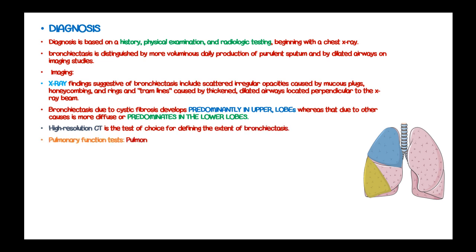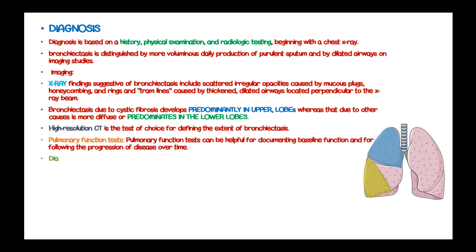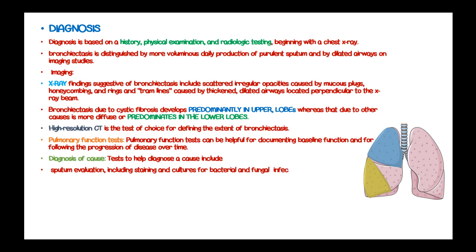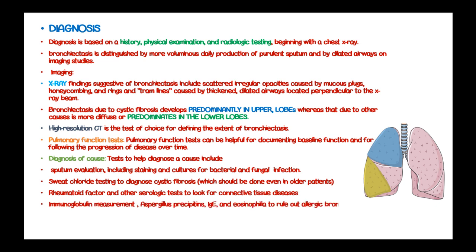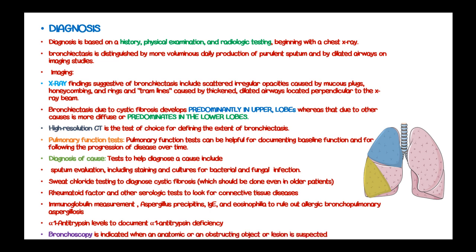High-resolution CT scan is the test of choice for defining the extent of bronchiectasis, and pulmonary function tests help document baseline function and follow disease progression over time. To diagnose the cause, tests include sputum evaluation with staining and cultures for bacterial and fungal infection, sweat chloride testing to diagnose cystic fibrosis, rheumatoid factor and other serologic tests for connective tissue diseases, immunoglobulin measurements such as Aspergillus precipitins, immunoglobulin E, and eosinophilia for allergic bronchopulmonary aspergillosis, and alpha-1 antitrypsin levels to document alpha-1 antitrypsin deficiency. Bronchoscopy can be done whenever an anatomic or obstructing lesion is suspected.